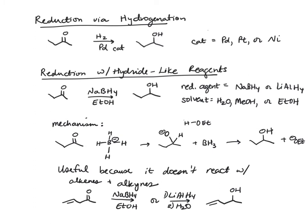Our first reduction reaction is one you've seen before — the reduction of a carbonyl carbon with hydrogen, and a catalyst of either palladium, platinum, or nickel. Here we've got hydrogen adding across the pi bond: one hydrogen highlighted in blue, and another hydrogen atom added across that carbonyl carbon, so we're getting addition of elemental H2 across the pi bond, giving us an alcohol — a secondary alcohol in this case.